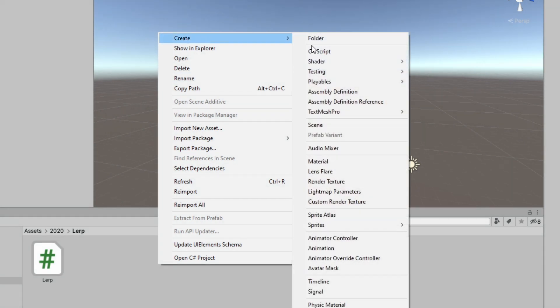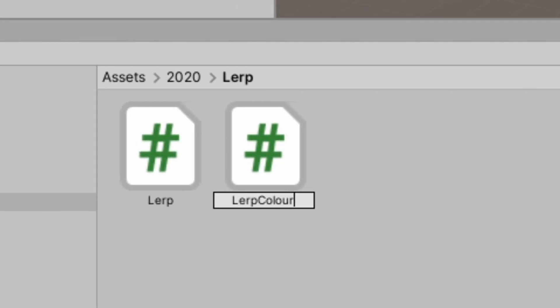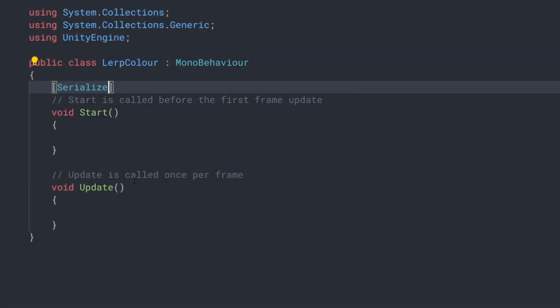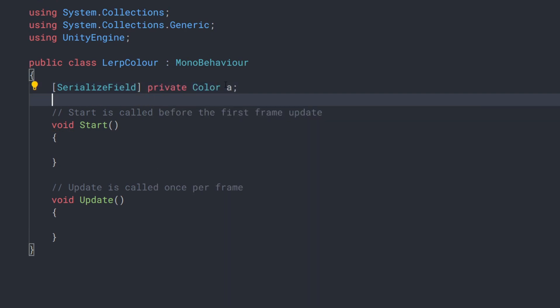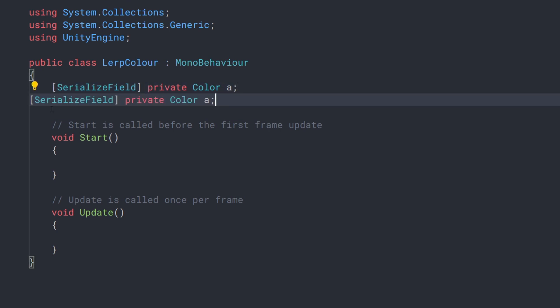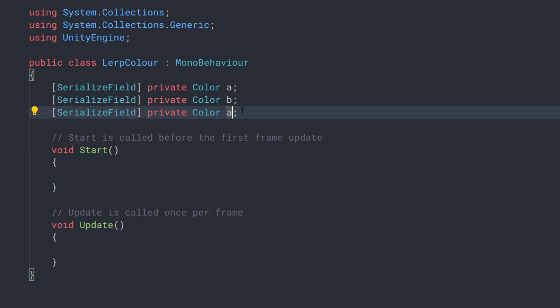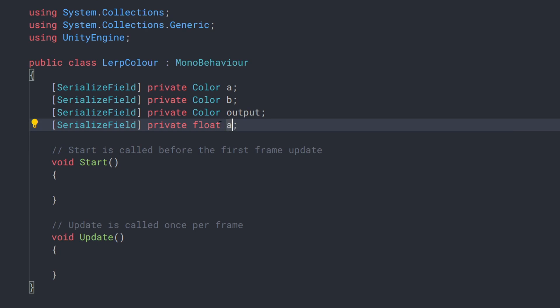So, we will want to set up a script called LERP-COLOR. In the class, we will expose two fields in the inspector, A and B, that represent the start and end colours, and we'll also have an extra colour field which we will use to quickly display the output colour of this LERP. Then we'll add a float for the percentage.